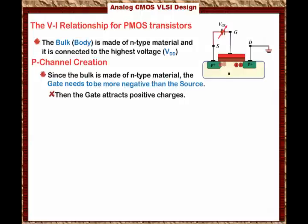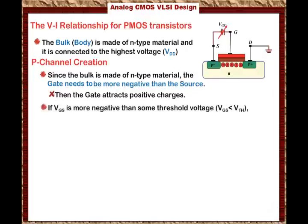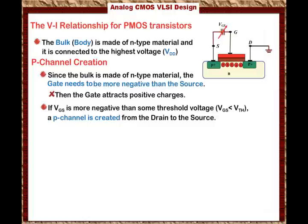Most of these positive charges will come from the source. If VGS is more negative than some threshold voltage — bigger in value but negative — then a P-channel is created from the drain to the source. As you can see in the diagram, once the channel is created, the current can flow from the source to the drain.